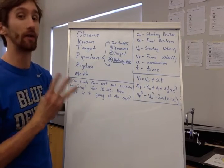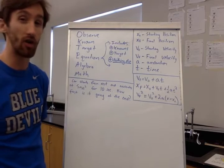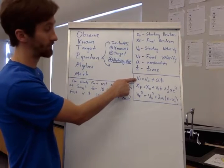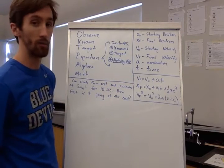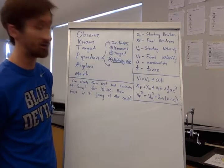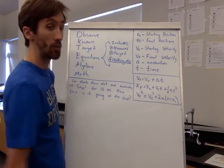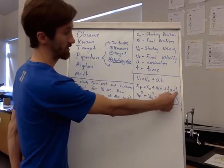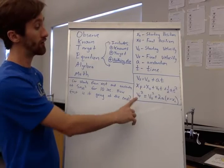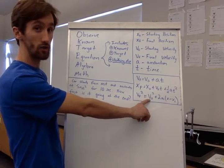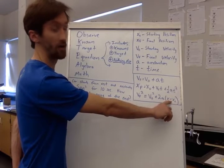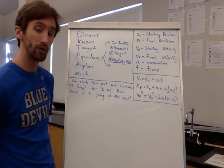We have three equations that we use when talking about motion. All three are on the official AP Physics equation sheet. The first is: final velocity equals initial velocity plus acceleration multiplied by time. The second is: final position equals initial position plus initial velocity multiplied by time, plus one-half the acceleration times time squared. The third is: final velocity squared equals initial velocity squared plus two times acceleration times the change in position, or Xf minus X₀.